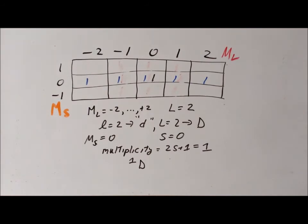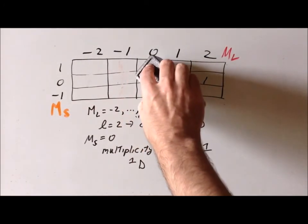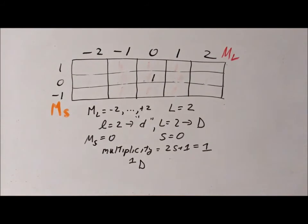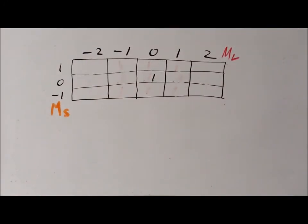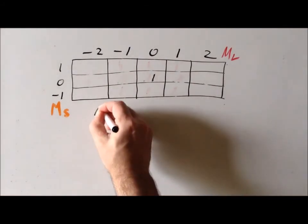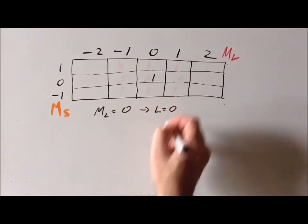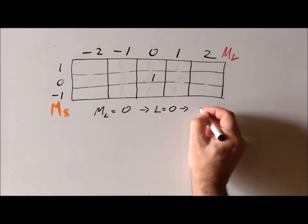Once we've used up the five microstates that contribute to this term symbol, we erase them — these are the blue microstates. Now we notice that we have one and only one microstate remaining. This last of our 15 microstates occupies a one by one rectangle, but that's perfectly valid. The M sub L value in this case is equal to zero, which tells us that the big L value has to equal zero, and we can likewise conclude that this is a big S state.